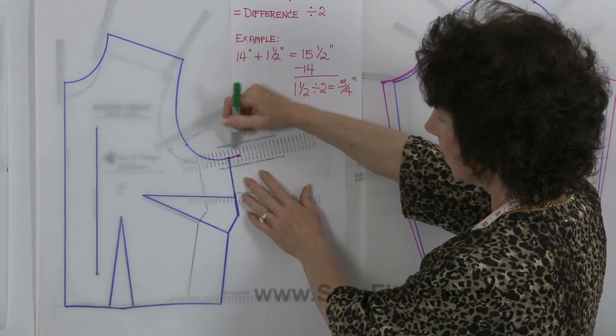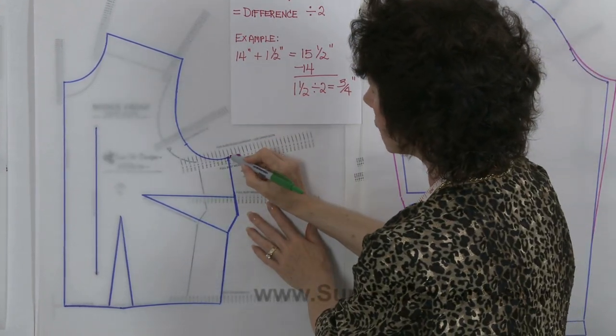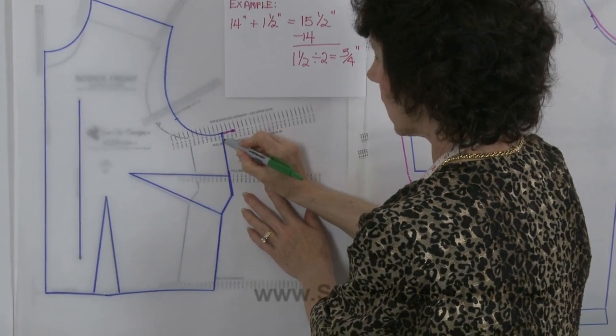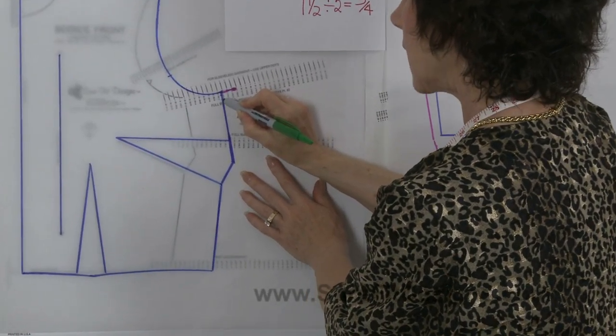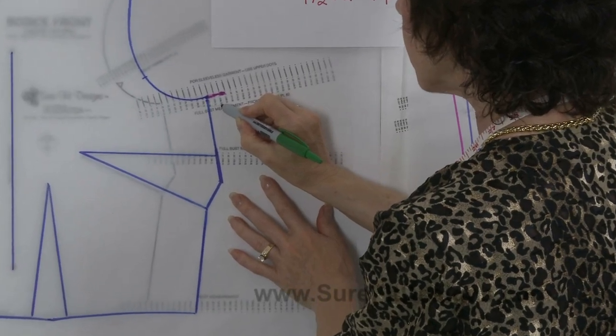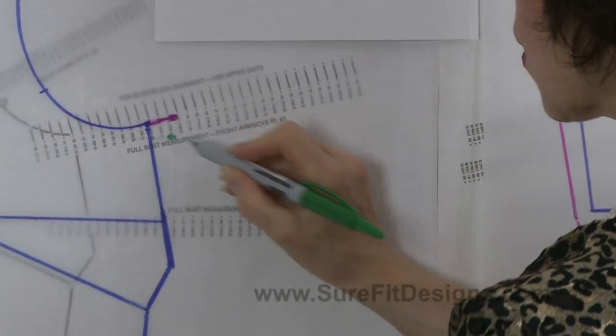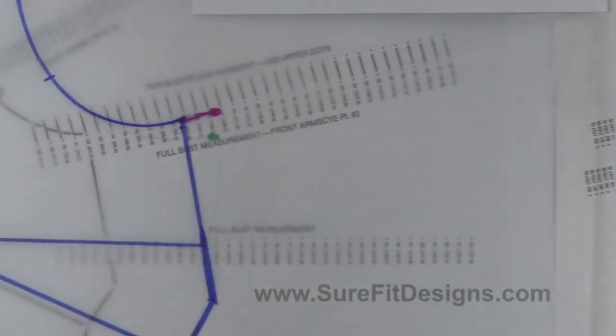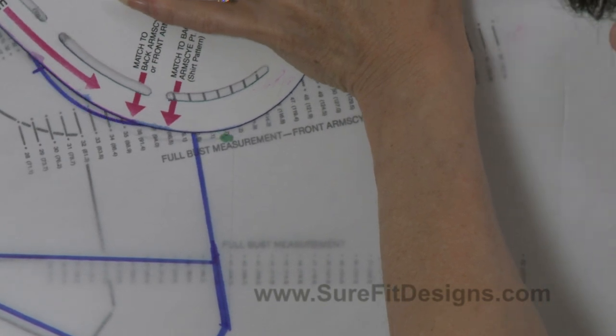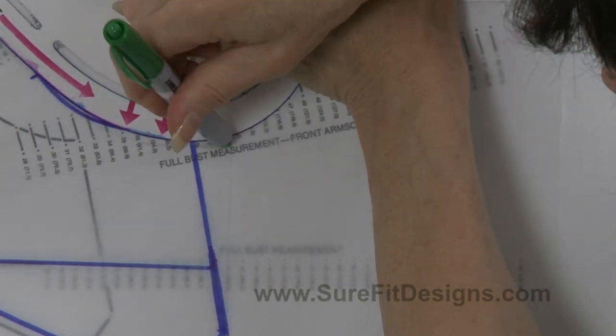But there is something that I think works equally as well and it won't add quite so much fullness at your bust line area. I like to drop the underarm approximately a half an inch and then come out about five-eighths of an inch. It's not a lot of difference between your three quarters, but it is a little bit.